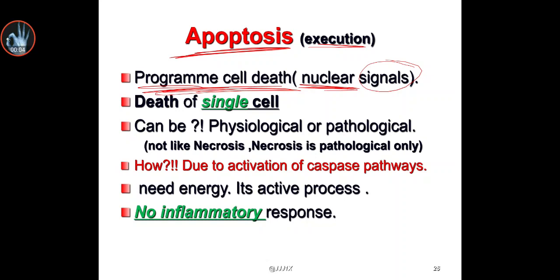As-salamu alaykum wa rahmatullahi wa barakatuh. Today we're going to talk about general pathology. As we discussed in the introduction, we talked about cell injury, reversible and irreversible cell injury leading to death, and the two pathways of cell death: necrosis and apoptosis. We already talked about necrosis in the previous lecture; today we will talk about apoptosis.